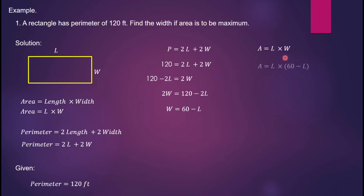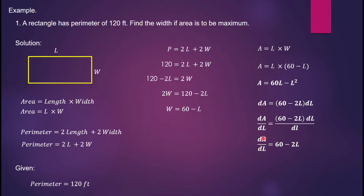The area A = L × W. Substitute the equivalent of W: A = L(60 − L). Differentiate: DA/DL = 60 − 2L. Equate the derivative to zero: 0 = 60 − 2L, so −60 = −2L, giving L = 30.